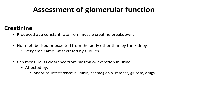Let's take a closer look at creatinine. Creatinine is produced at a constant rate from muscle creatine breakdown. It is not metabolised or excreted from the body other than by the kidney, and only a very small amount is excreted by the tubules. You can measure its clearance from plasma or excretion in urine. It is affected by analytical interference from bilirubin, haemoglobin, ketones, glucose, and drugs.